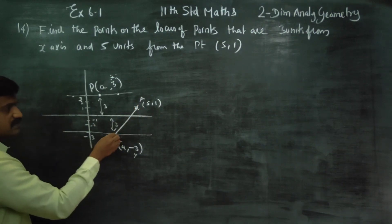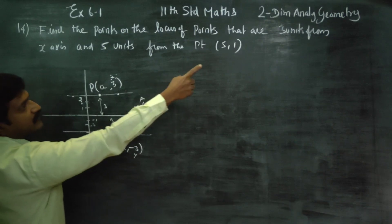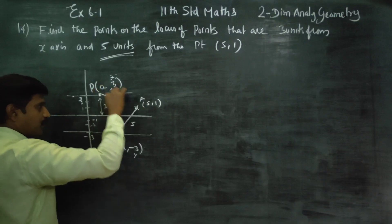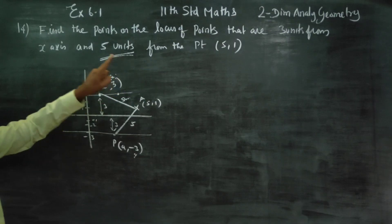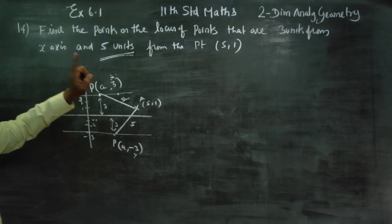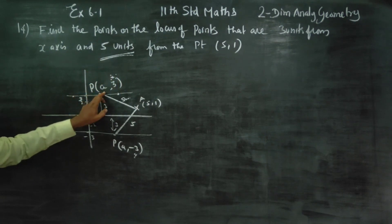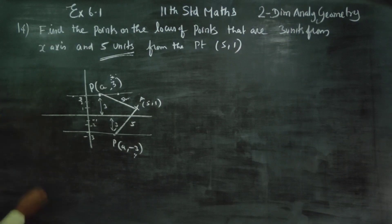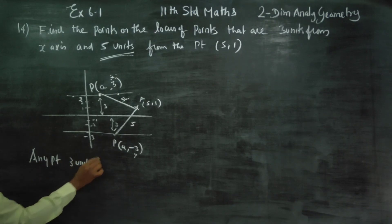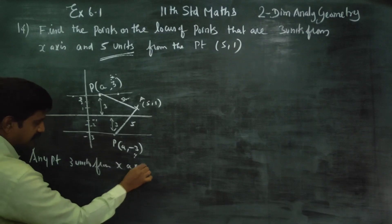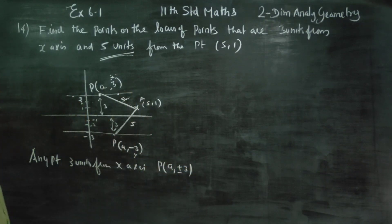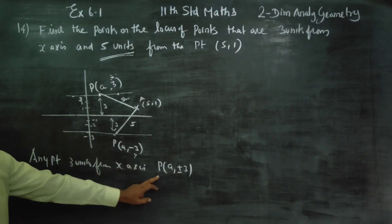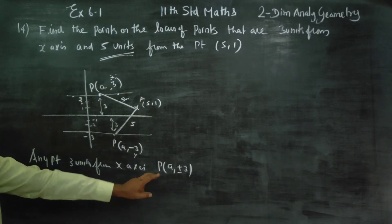If you measure this, you will be getting 5 units. Any point 3 units from the x-axis will be of the form (a, plus or minus 3). Any point 3 units from x-axis — points are of the form (a, plus or minus 3) — above and below.